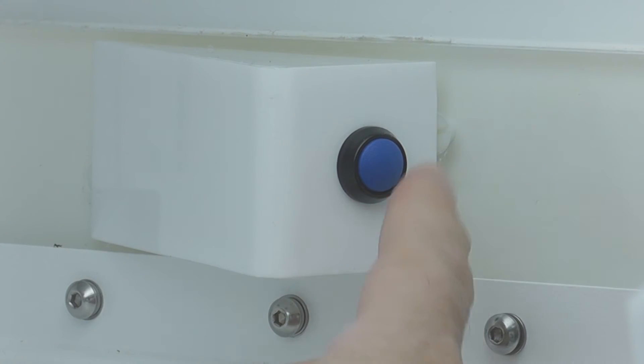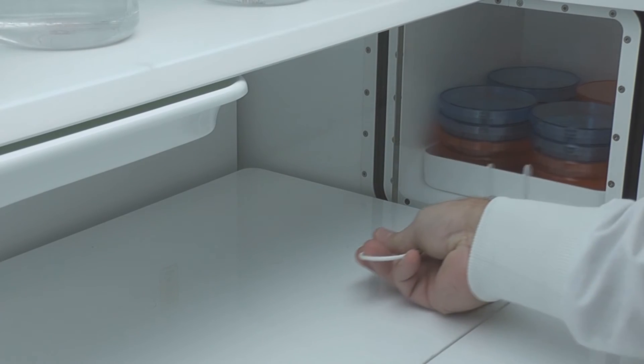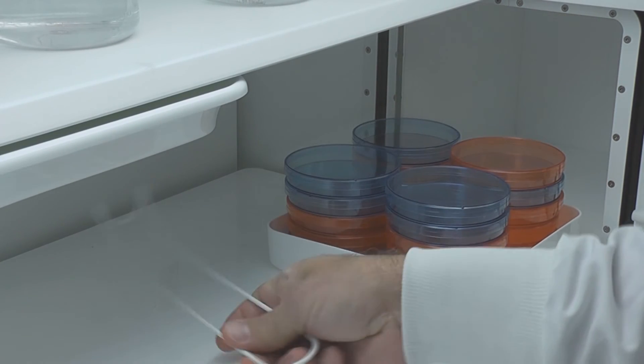Depress the blue button from within the workstation to open the inner door. Using the hook, pull the tray from the airlock into the workstation.